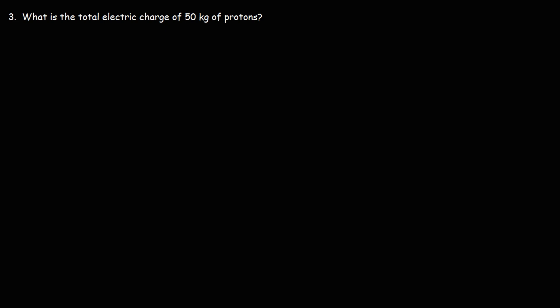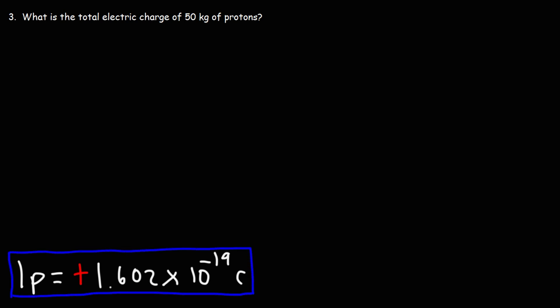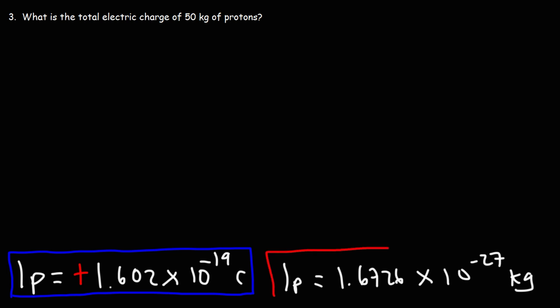What is the total electric charge of 50 kilograms of protons? How would you calculate the electric charge if you're given the mass instead of the number of moles? We use a conversion process. The charge on one proton is positive 1.602 times 10 to the negative 19 coulombs. The mass of one proton is 1.6726 times 10 to the negative 27 kilograms. With these two conversion factors, we can convert from 50 kilograms to electric charge in coulombs.